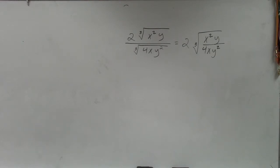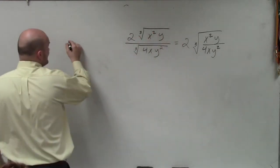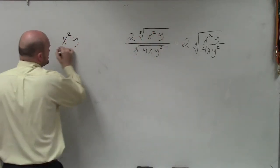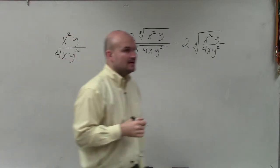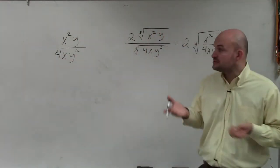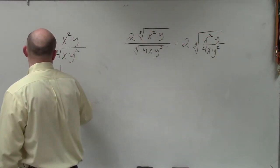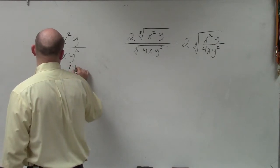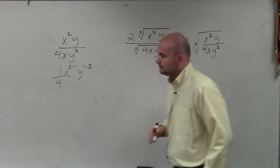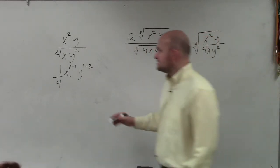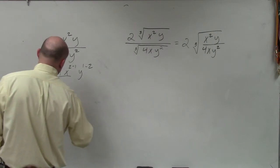Now we have a rational expression. And hopefully, in this class, from your last test, you remember how to simplify a rational expression. When we're simplifying rational expressions, we are going to divide the powers. So this is going to be 1 fourth x to the 2 minus 1, y to the 1 minus 2. So my simplified expression becomes x over 4y.